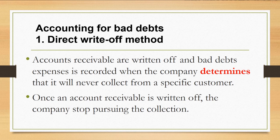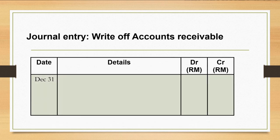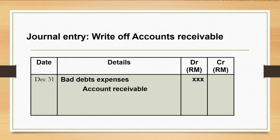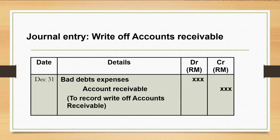Under the direct write-off method, accounts receivable are written off and bad debts expense is recorded when the company determines that it will never collect from a specific customer. Once an account receivable is written off, the company stops pursuing the collection. To record the write-off, we debit bad debt expenses because expenses increase, and credit account receivable because writing off reduces the amount of account receivable.